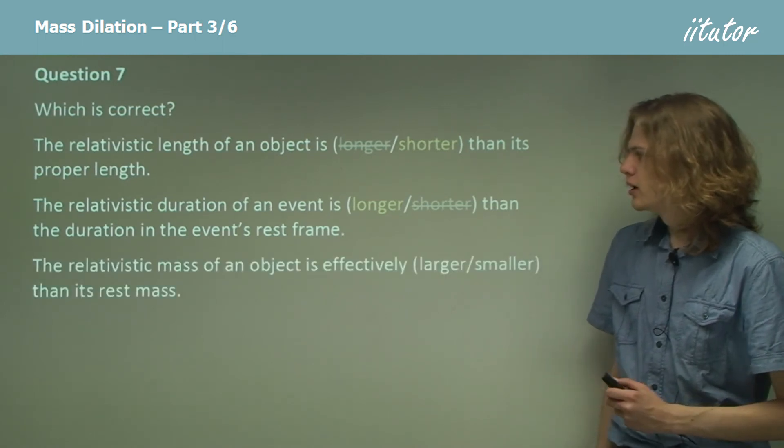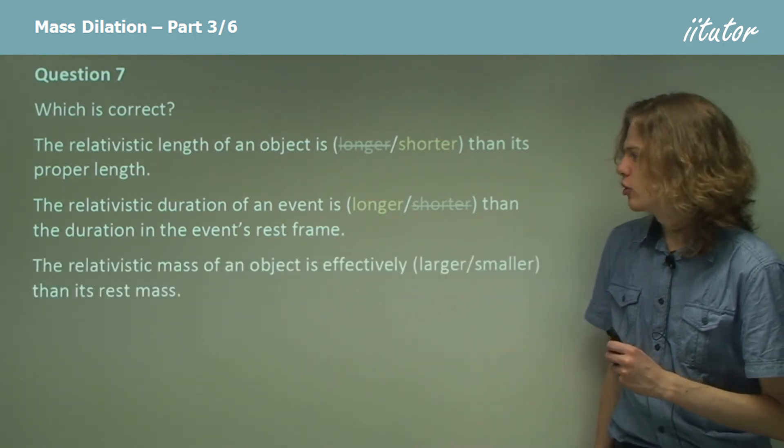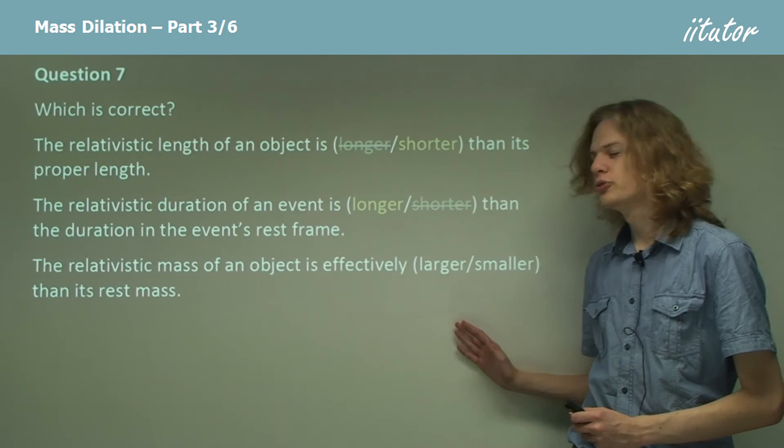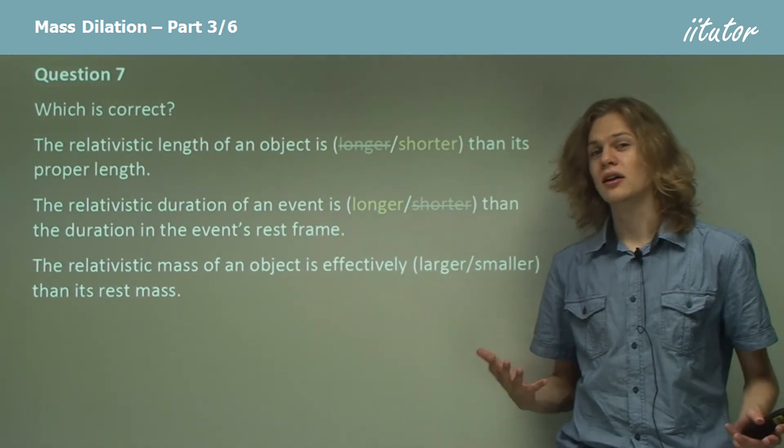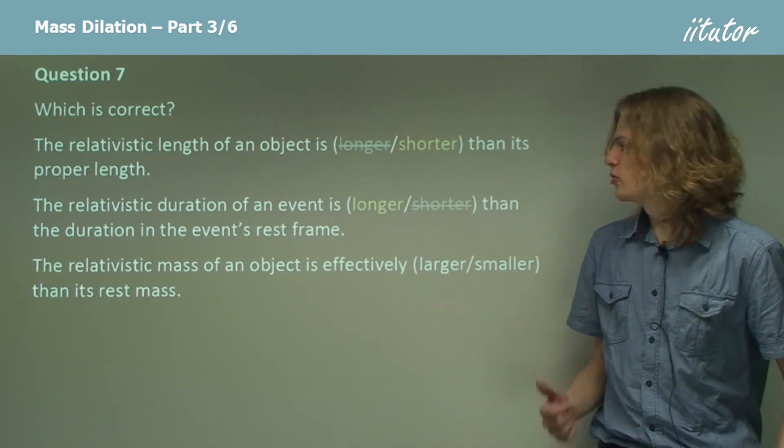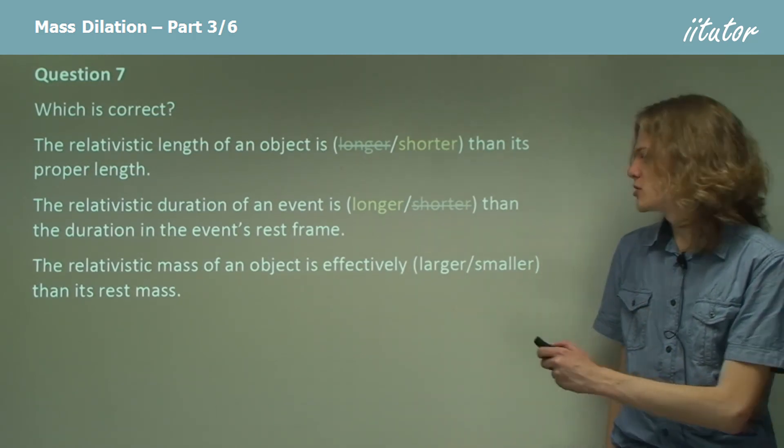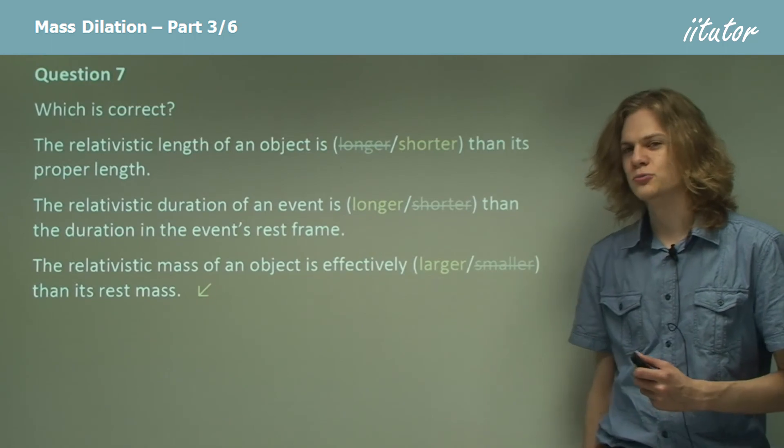Finally, the relativistic mass of an object is larger or smaller than its rest mass. Well of course it's mass dilation, right? So the relativistic mass must be larger than its rest mass.